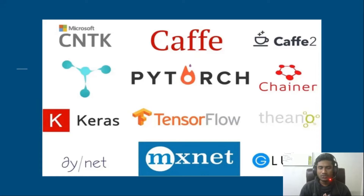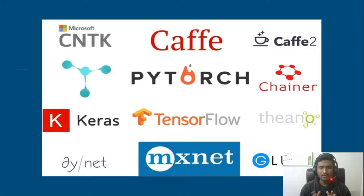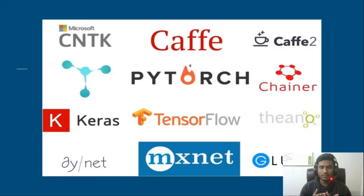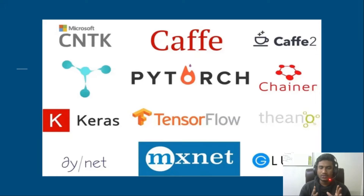Each framework provides different functionality so you can solve different problems. PyTorch is well known for computer vision because it is more powerful for that. TensorFlow is also powerful, and after Keras came along it made our life easier. Keras uses TensorFlow in the backend — it takes TensorFlow's low-level API and exposes a high-level API. So when we used to use TensorFlow directly, we needed to write tons of code, but with Keras you write less code and can solve any given problem.